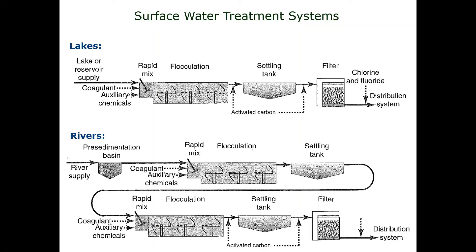Lake water tends to have less clay and sediment because a lake is essentially a giant settling tank. It doesn't mean it doesn't have other things in it, but for the sedimentation part of treatment, lake water usually requires way less alum and sedimentation because it's already kind of done that — depending on where the outtake is. Rivers pick up a lot more silt and clay, and you've got all the geology and other things to consider. Generally, lakes tend to have less solids.